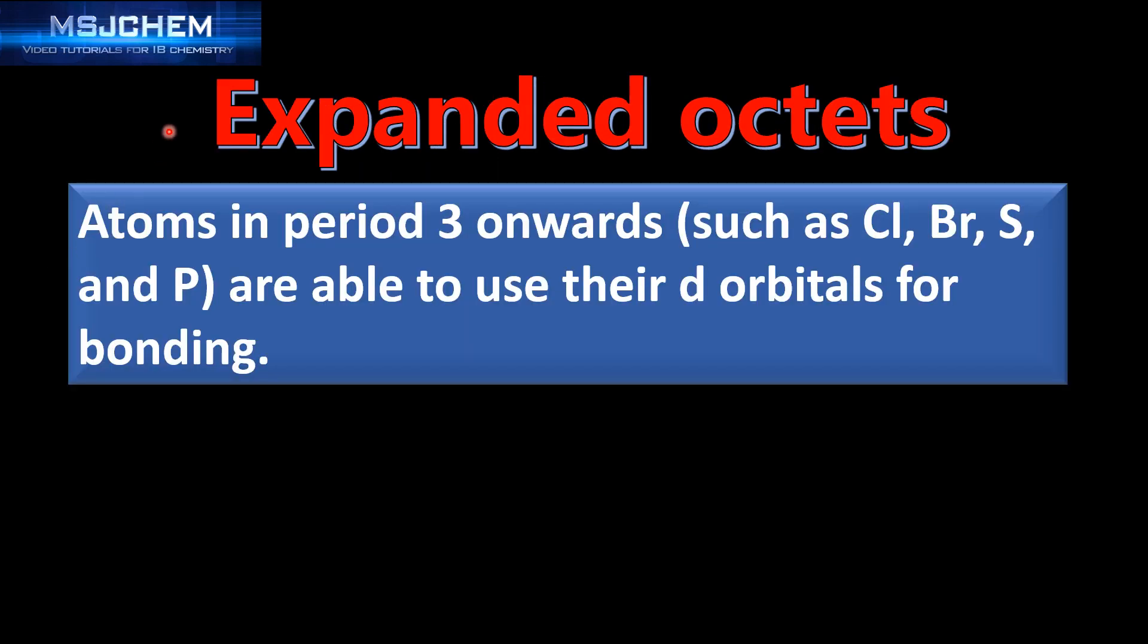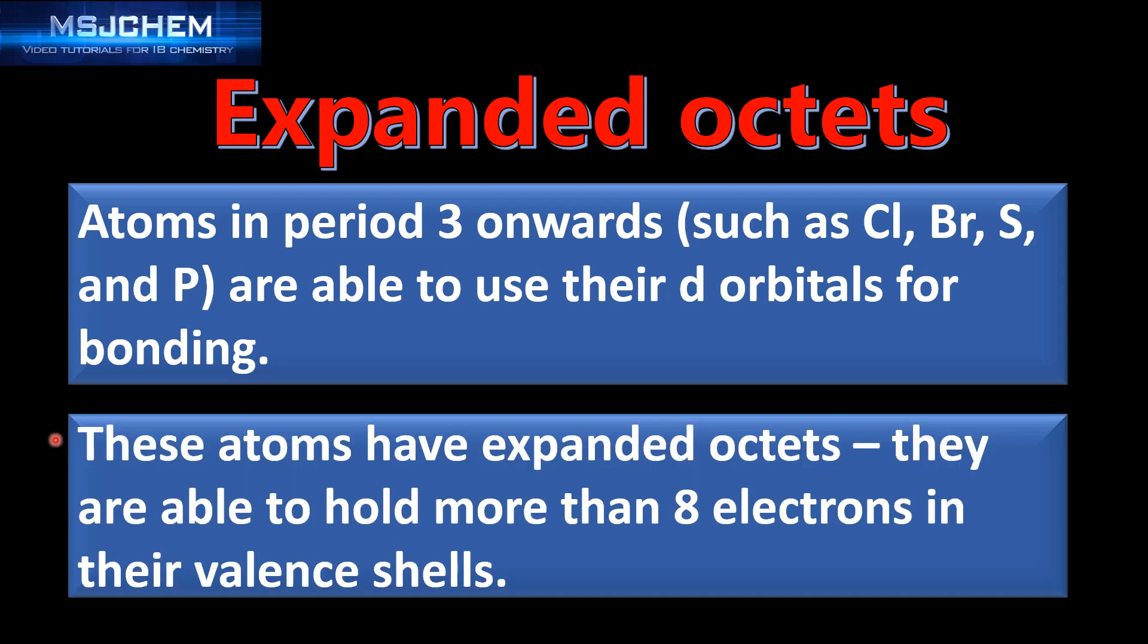Next we look at expanded octets. Atoms in period three onwards such as chlorine, bromine, sulfur and phosphorus are able to use their d orbitals for bonding. These atoms have expanded octets.